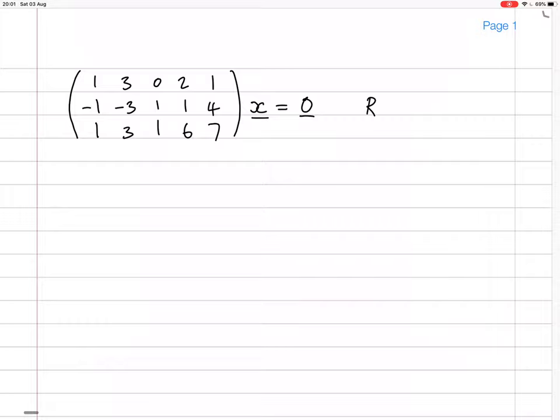Gaussian reduction. Row 2 plus row 1, and row 3 minus row 1. We get the same first row: 1, 3, 0, 2, 1. The second row becomes 0, 0, 1, 3, 5. The third row is 0, 0, 1, 4, 6.